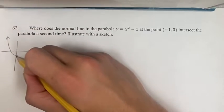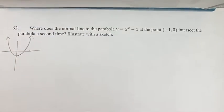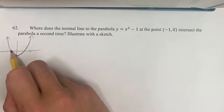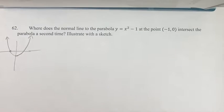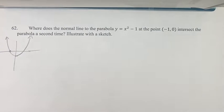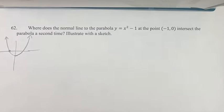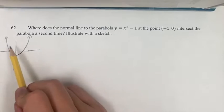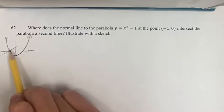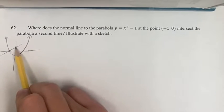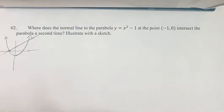Point negative 1, 0 is going to be right here on this graph. So where does this intersect the parabola a second time? Well the normal line is perpendicular to the parabola. It's going to be going something like this right where it's perpendicular at this point and you can see it'll hit it over here somewhere.